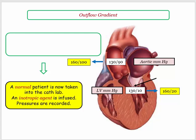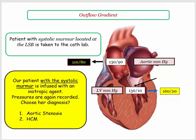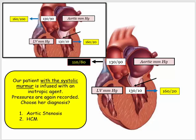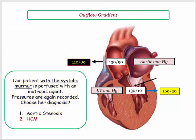Returning to our patient with a systolic murmur, she is taken to the cath lab and perfused with an inotropic agent. Compared to the normal response, we see a different set of pressures. The LV pressure has risen as expected, but in our patient the aortic pressure has fallen. The answer to this hemodynamic assessment is hypertrophic cardiomyopathy. The inotrope worsened the obstruction by bringing the LV walls into greater apposition — a similar response is observed during exercise.